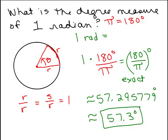So when you look at this picture here, this angle is approximately 57 degrees. That's approximate. So one radian is about 57.3 degrees.